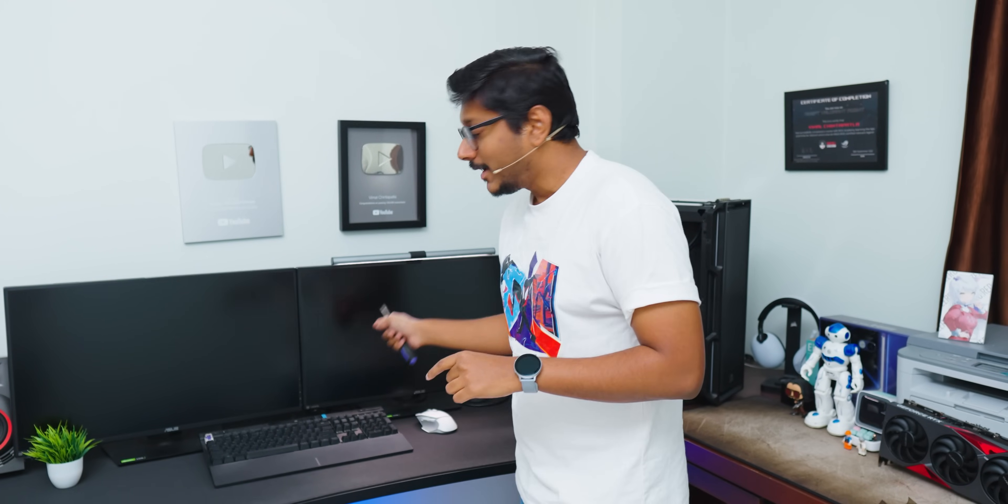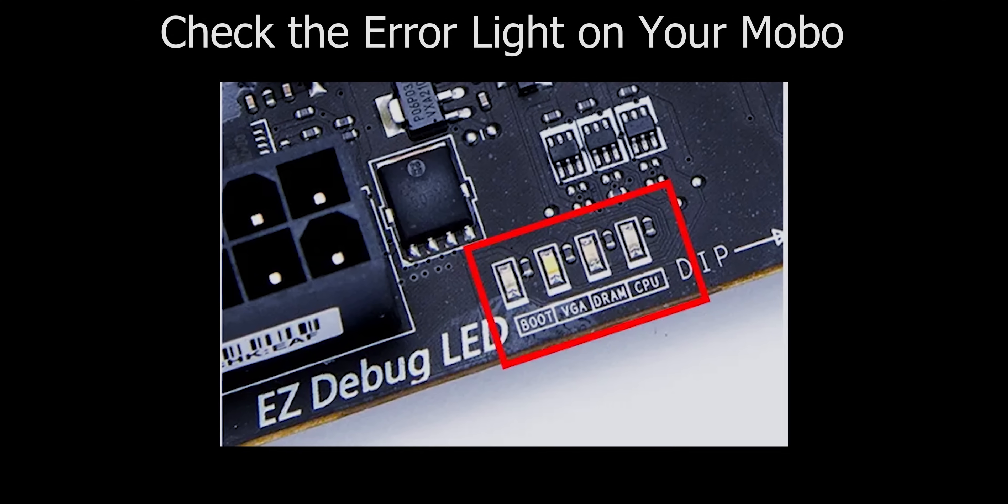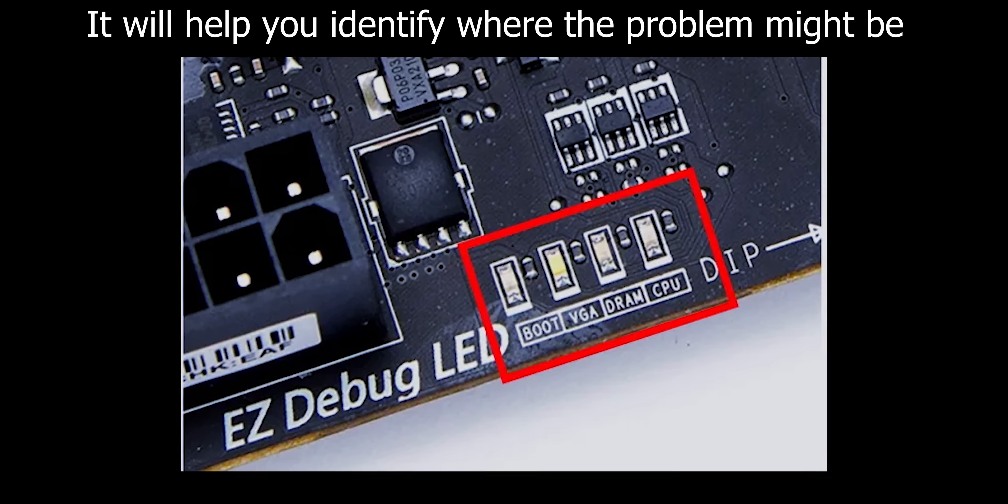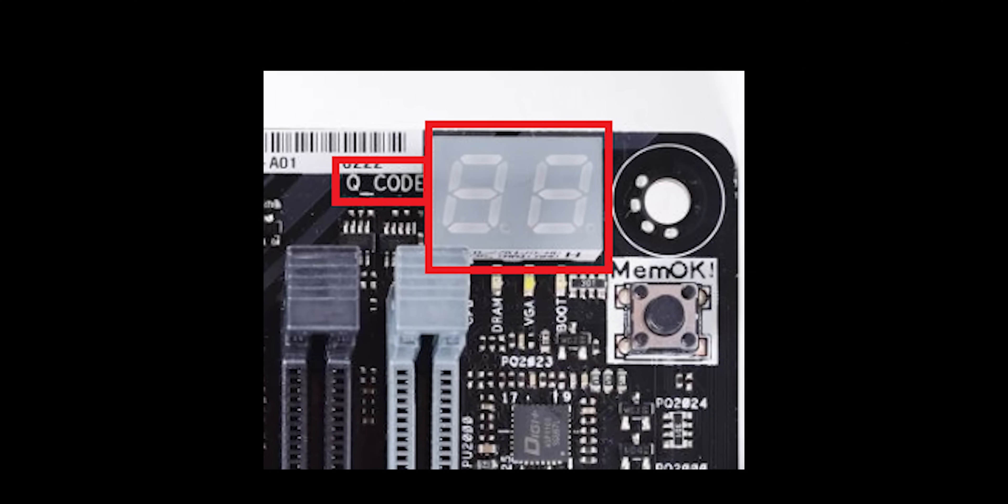Even if your PC turns off, give it some time — leave it for about five minutes and try to power it on again. If all the lights of different components power on but you're still not getting any display, start looking for error lights on your motherboard. If you get an error light on the DRAM LED, something is wrong with your RAM. Try replacing the RAM — 90% of the cases, this will solve your issue.